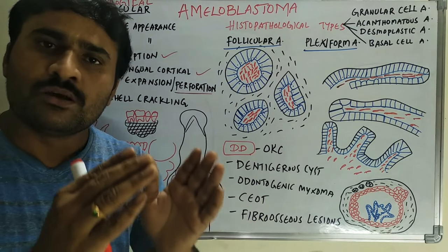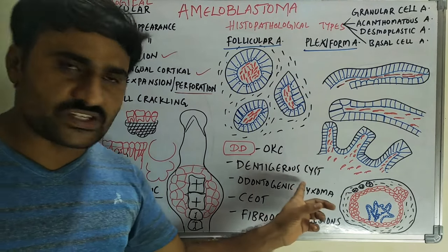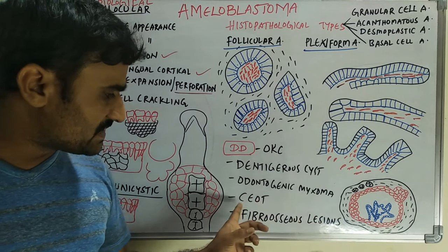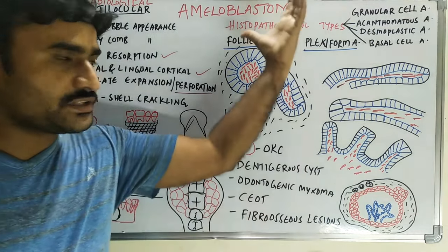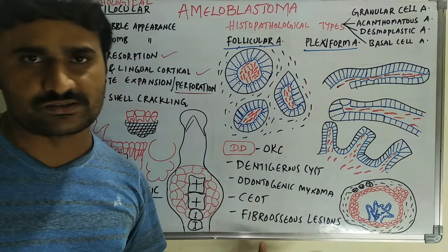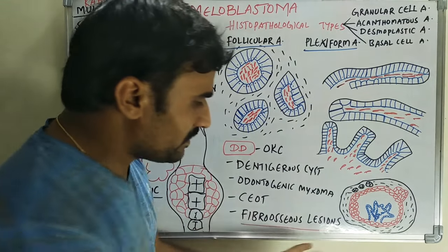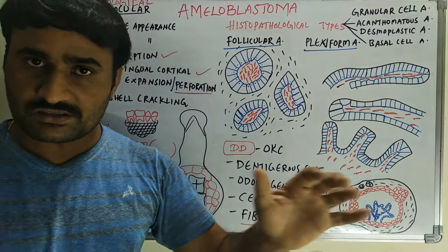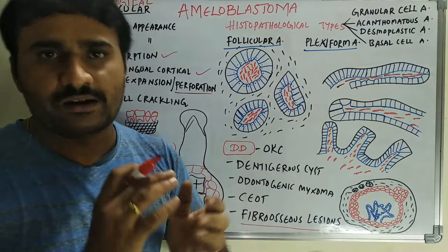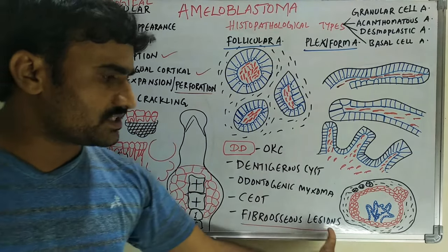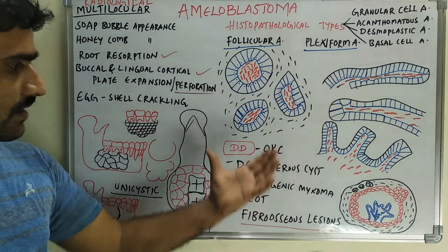For differential diagnosis, since the most common location is the posterior mandible, other pathologies in that region include odontogenic keratocyst (OKC), dentigerous cyst, odontogenic myxoma, calcifying epithelial odontogenic tumor (CEOT), and fibro-osseous lesions. Desmoplastic amyloblastoma tends to involve the anterior mandible or premolar region where fibro-osseous lesions are common, so these must be differentiated carefully.